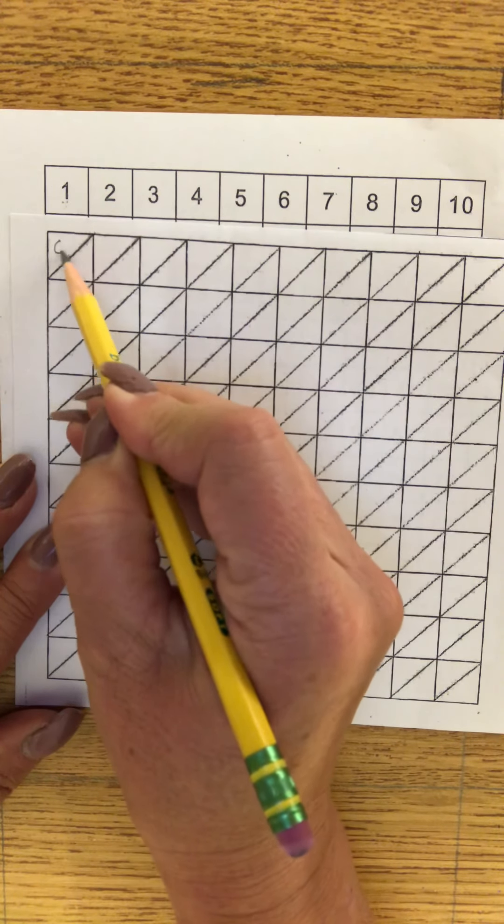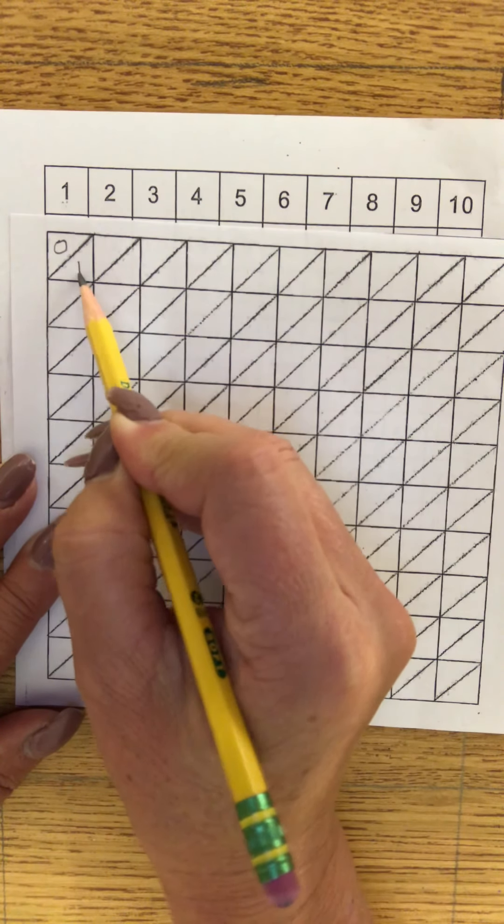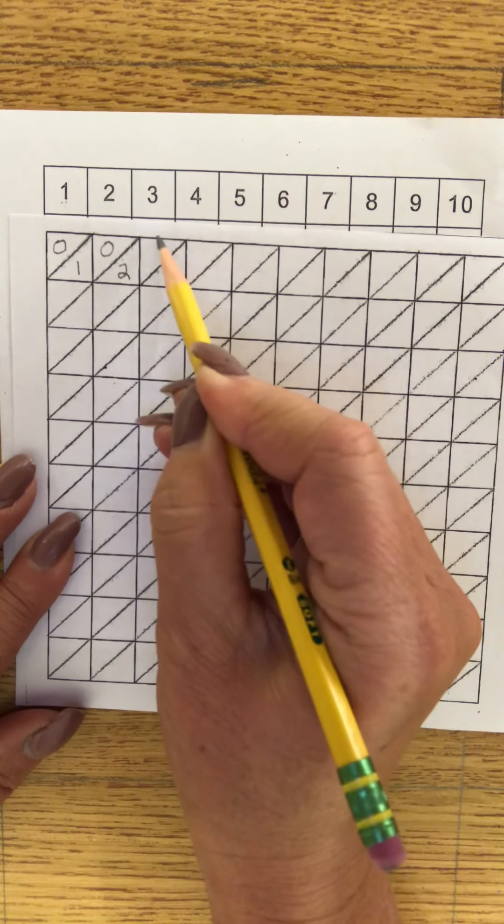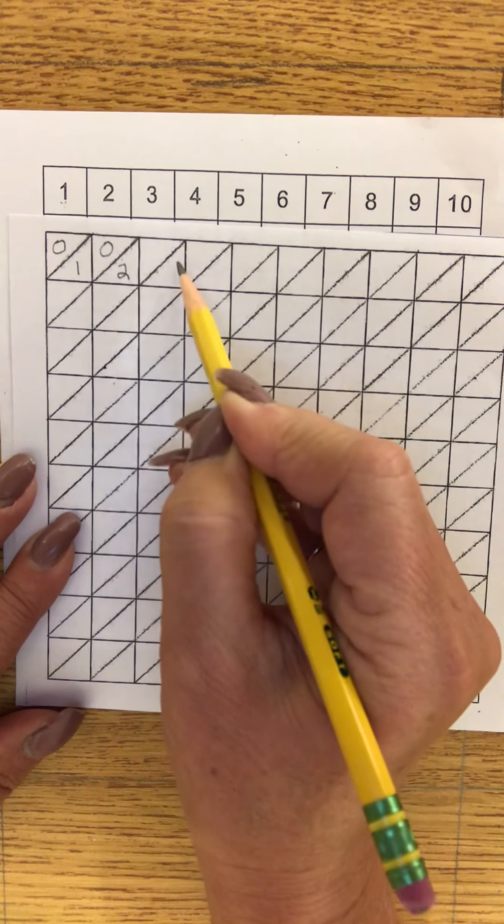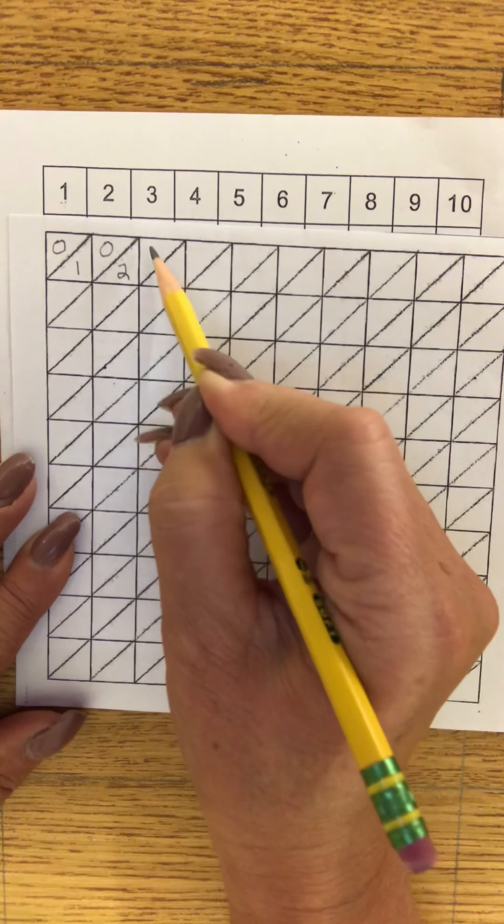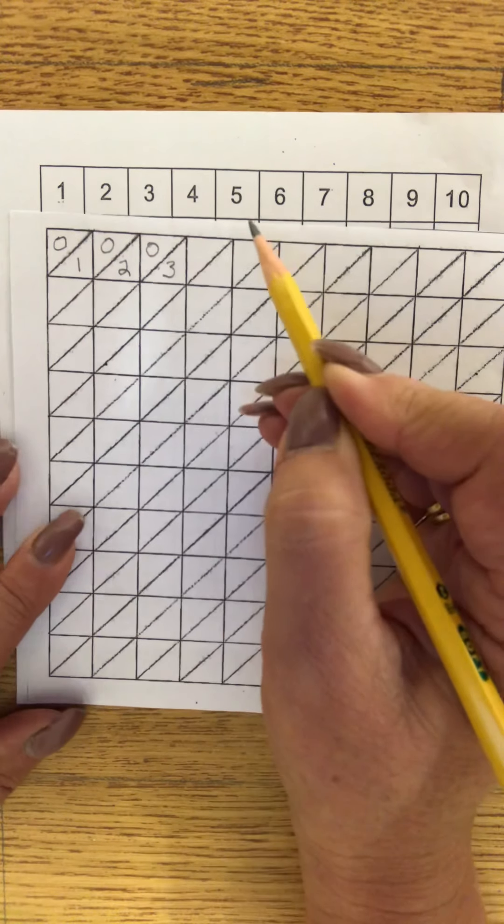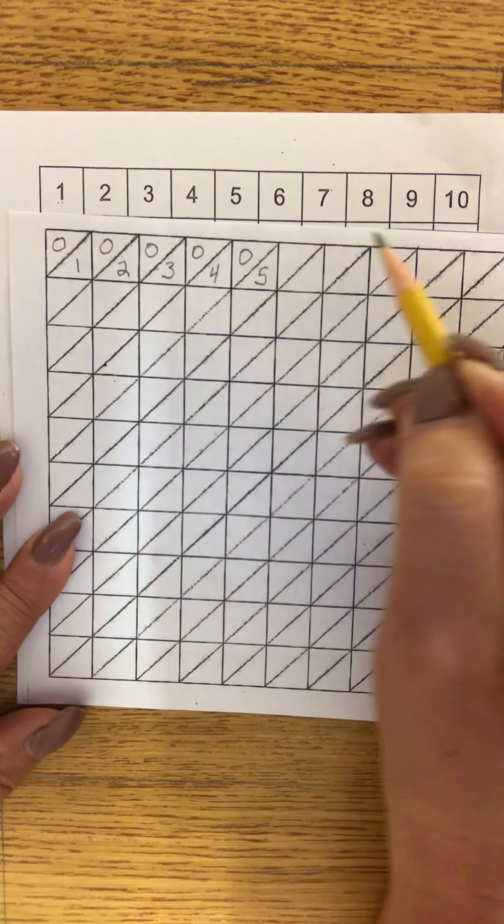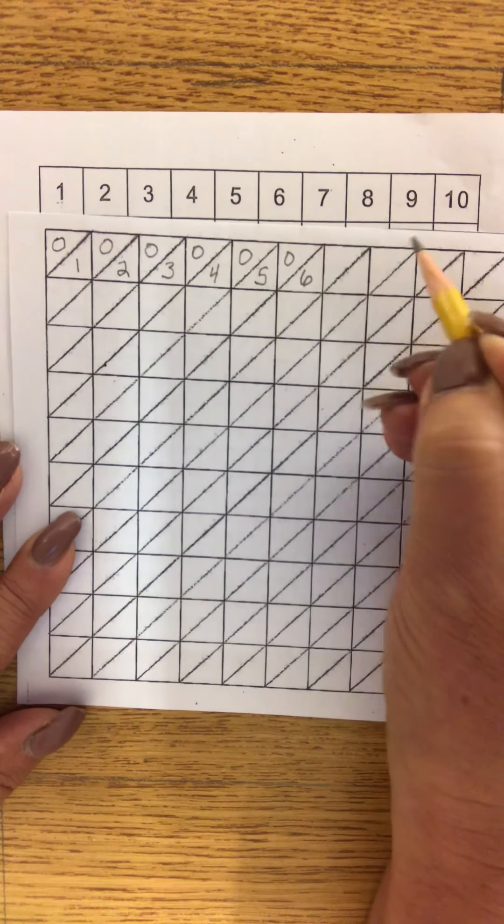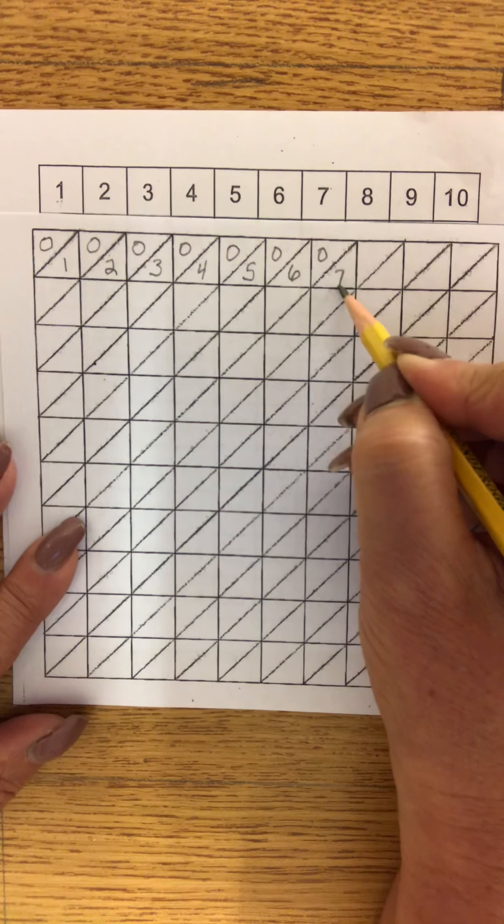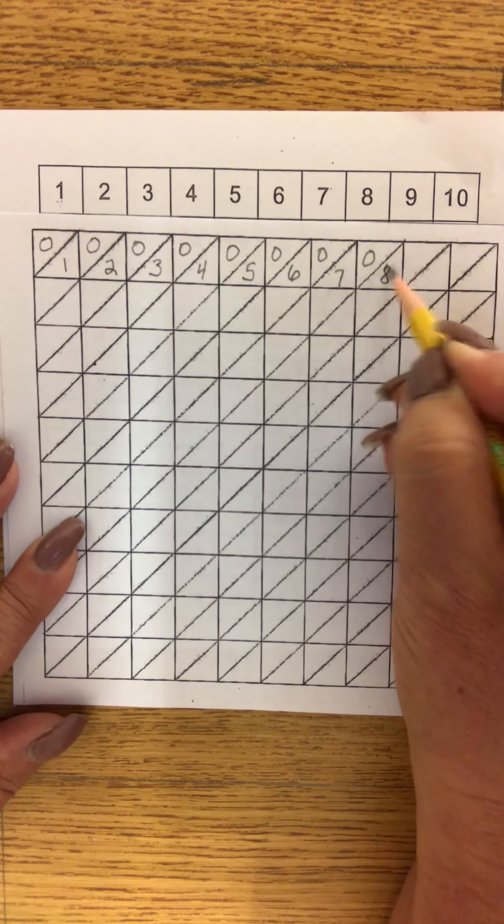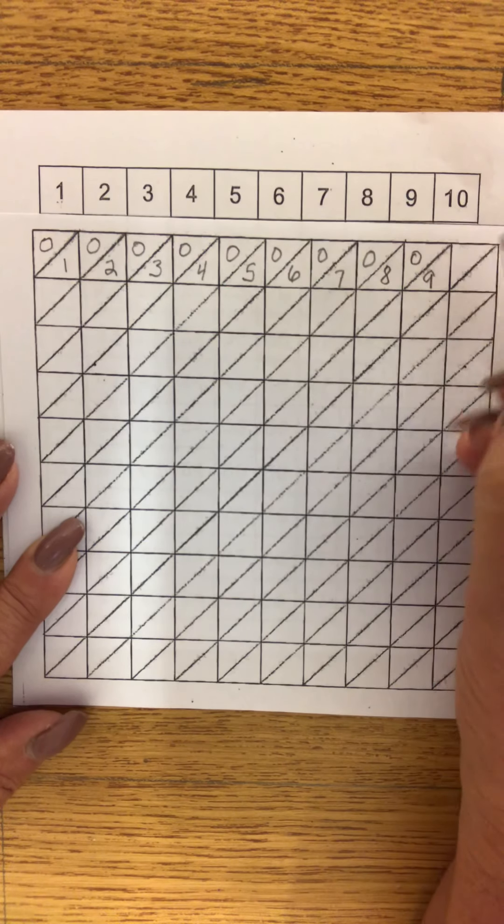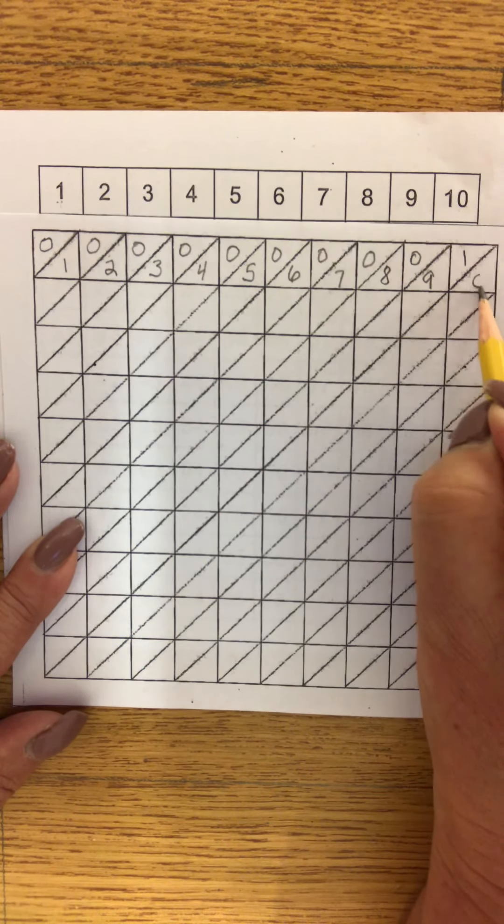So let's look at the number one. This is one one. There are zero tens, one one. Number two, zero tens, two ones. So the top left triangle are your tens, the bottom right triangle are your ones. Zero tens, three ones. Zero tens, four ones. Zero tens, five ones. Zero tens, six ones. Zero tens, seven ones. Zero tens, eight ones. Zero tens, nine ones. Now we have a ten. We have one ten, zero ones.